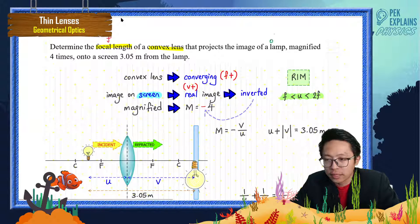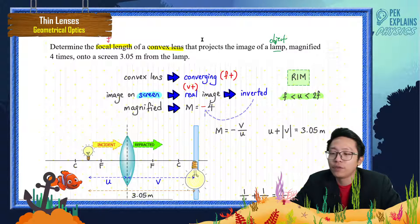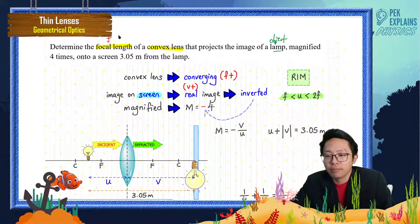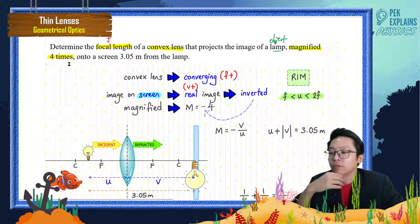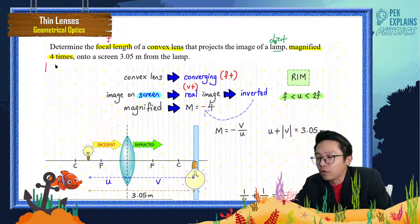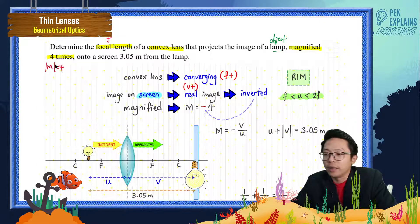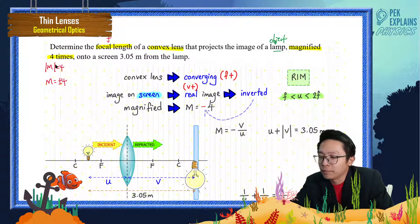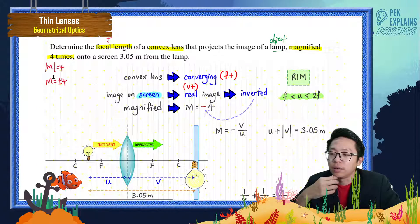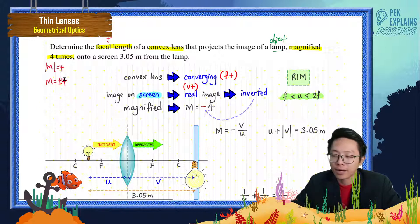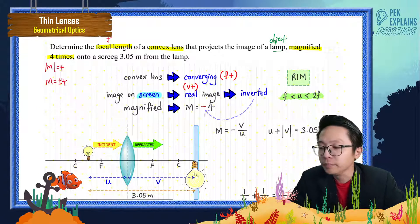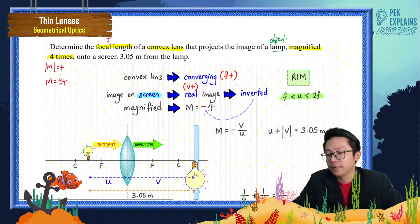The lamp is the object. It says the image is magnified four times — so it's a magnified image, not diminished, not same size. The magnification value is 4, but I'm not sure yet if it's positive or negative, so I'll write |m| = 4 for now. We'll determine the sign shortly.